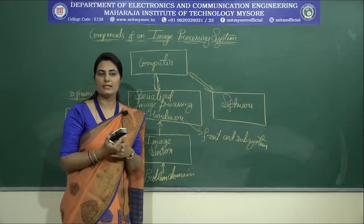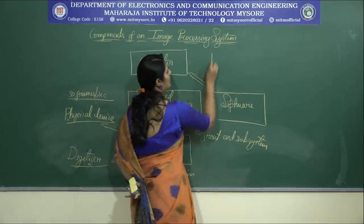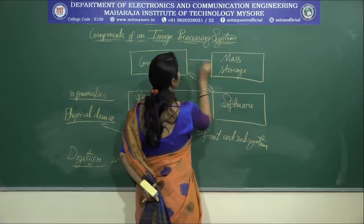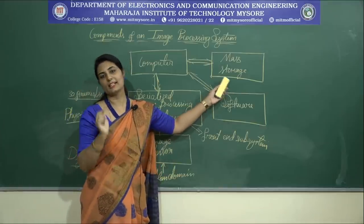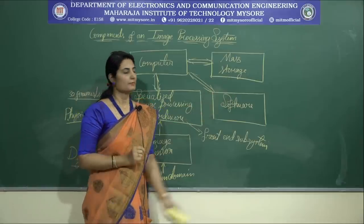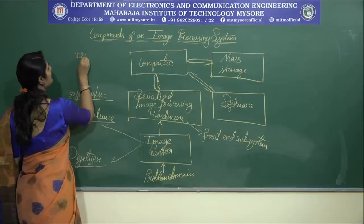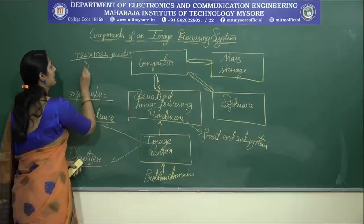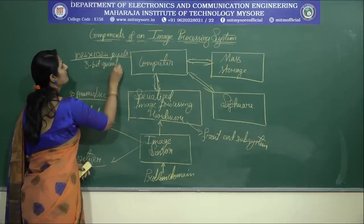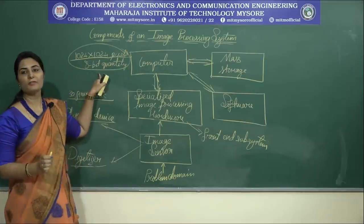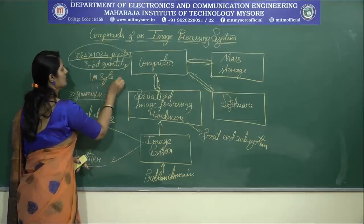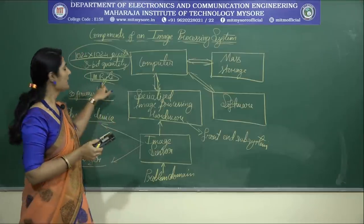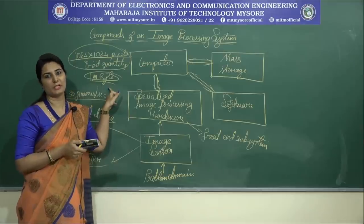When an image is processed and results are obtained, we need to store these images, so the next basic component is mass storage. Mass storage is an important consideration because, for example, an image of 1024 x 1024 pixels where the intensity of each pixel is an 8-bit quantity requires 1 megabyte of storage space. If you are dealing with thousands or millions of such images, providing adequate mass storage capacity becomes a significant challenge.